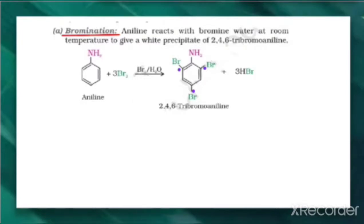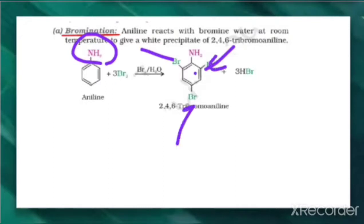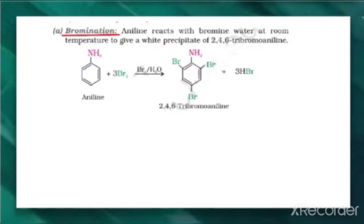That means it is not giving a mono-substituted product — here 3 substitutions of Br are taking place. Therefore, in order to control this, if we want to prepare a mono-substituted aniline derivative, we can do this by controlling the activating effect of the NH2 group. When we control the activating effect of NH2, we can get a mono-substituted product, meaning single substitution takes place.